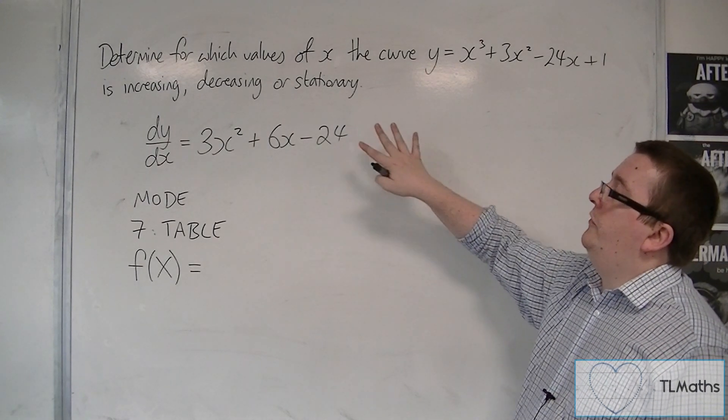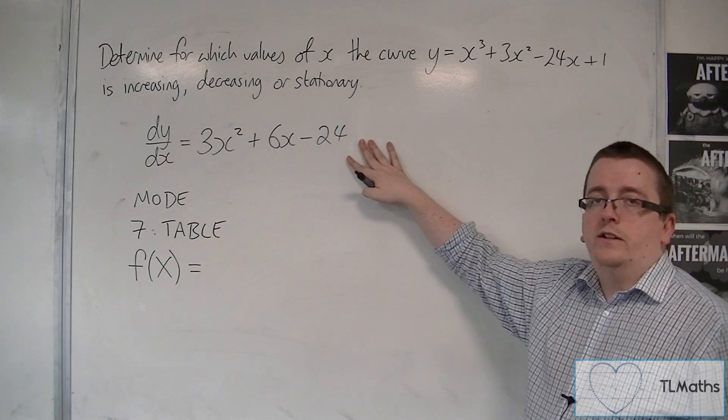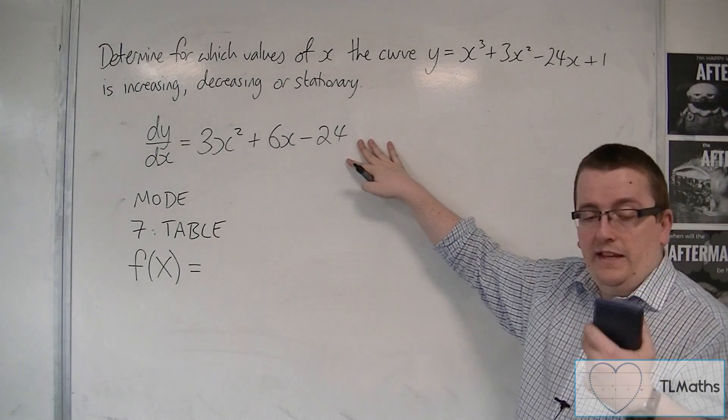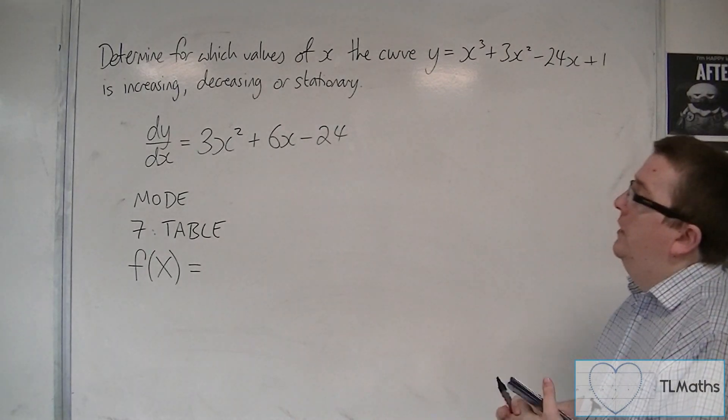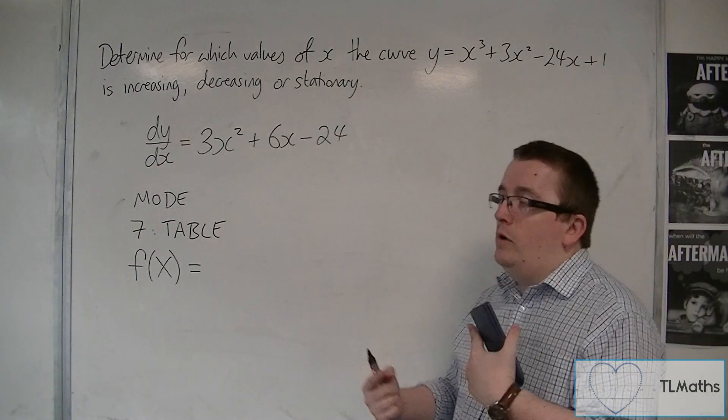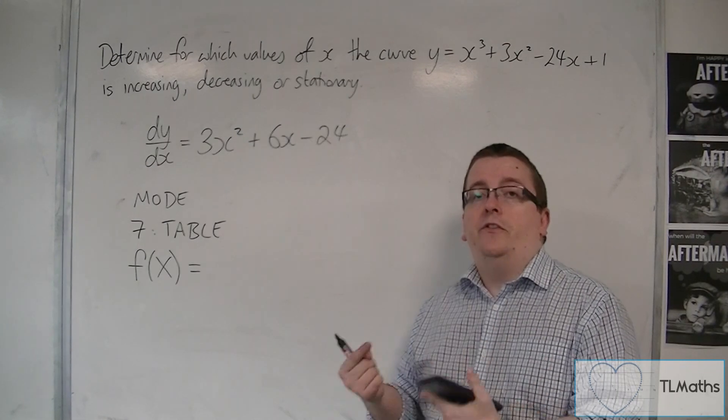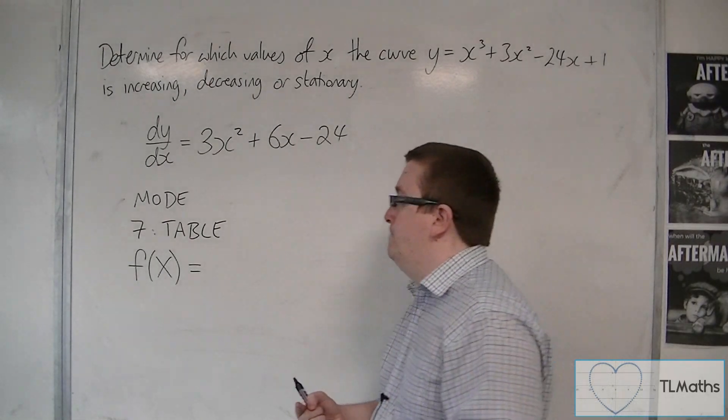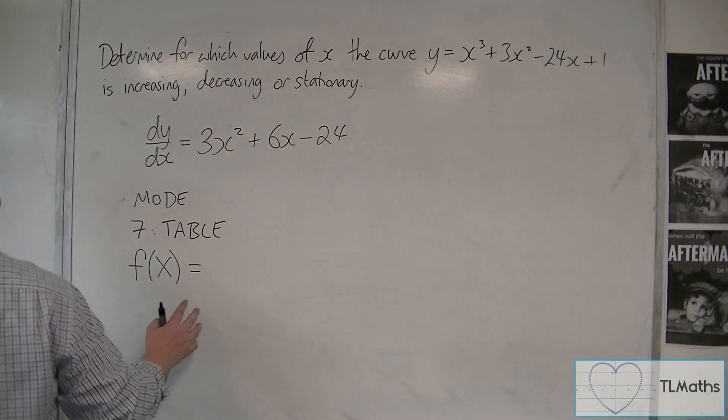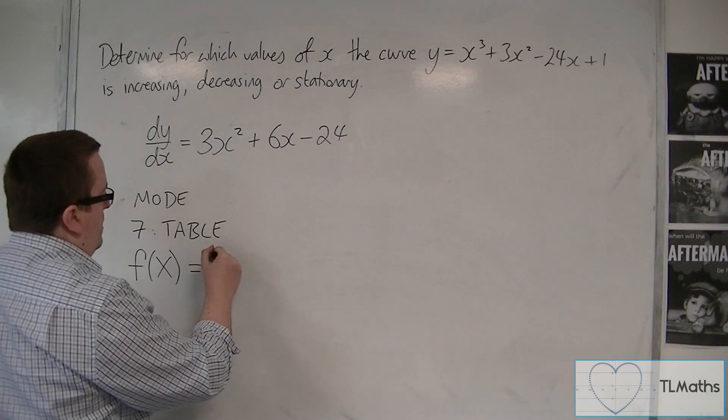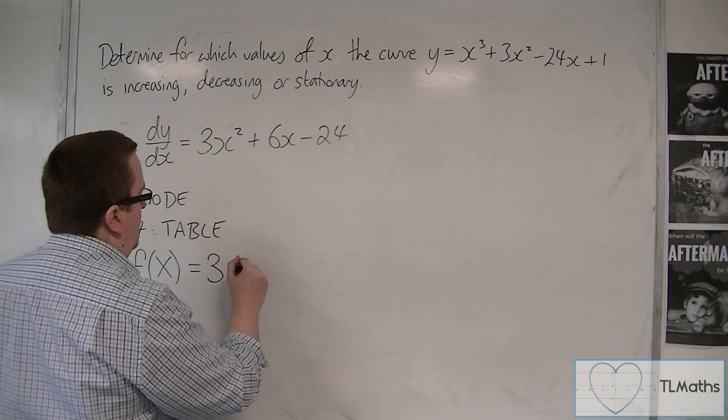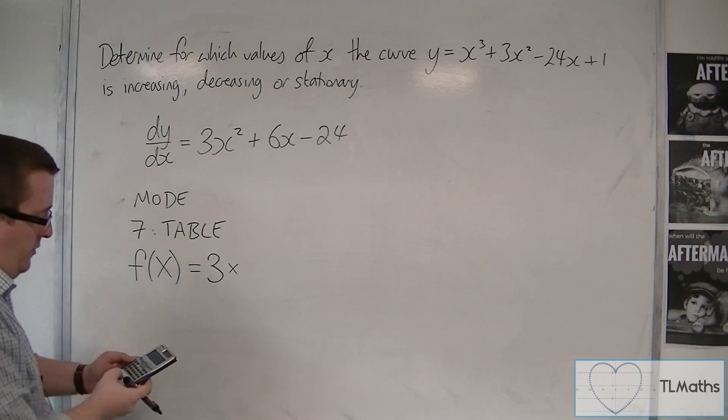What we want to do is type in this, and we are going to then get the calculator to substitute values in, to then look at the gradient of the curve either side of the stationary points. So we're going to type this in. You want to press 3, and then times.